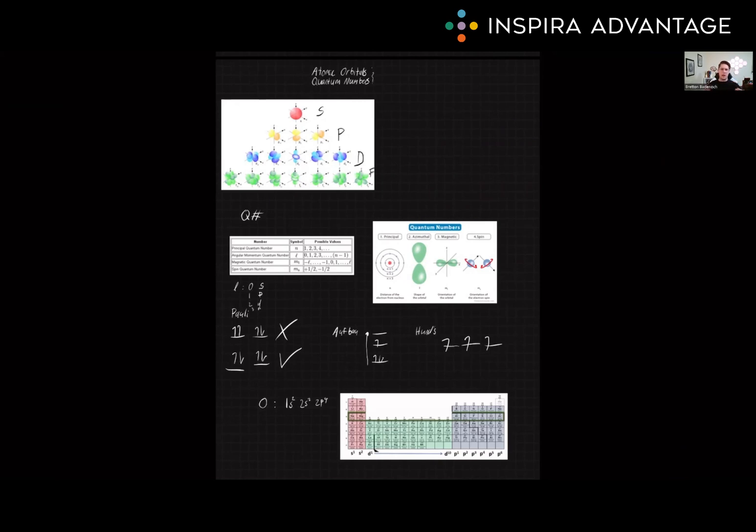It can also help explain chemical bonding. The distribution and availability of valence electrons determines the type of bond formed between those atoms. Are they going to be covalent bonds, ionic bonds, or metallic bonds?